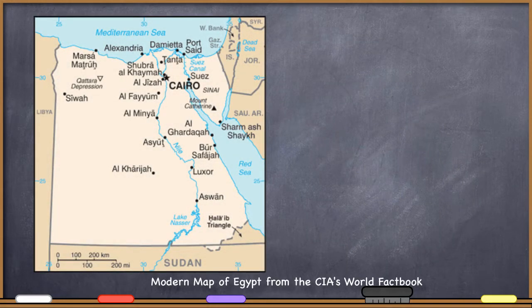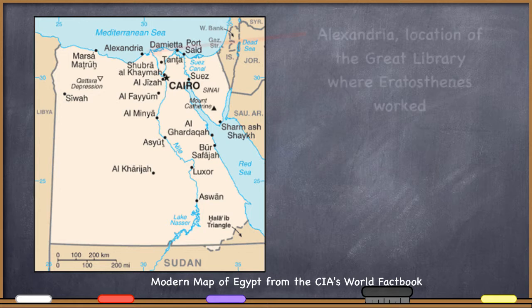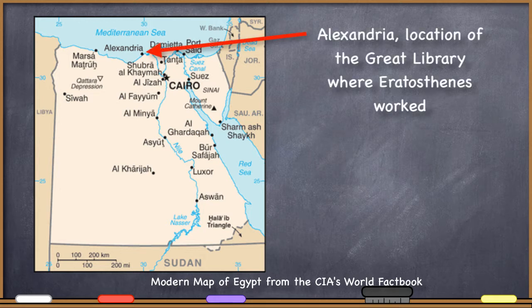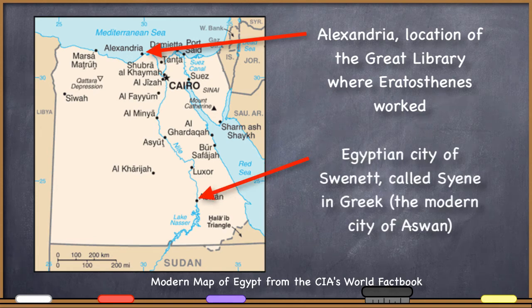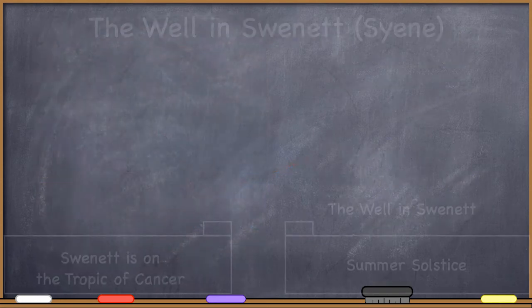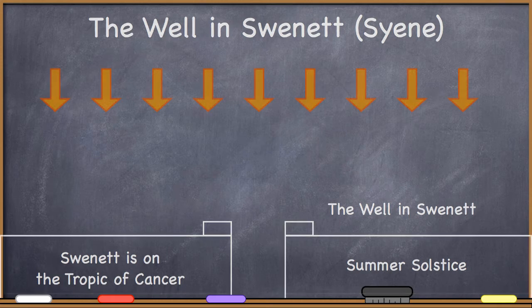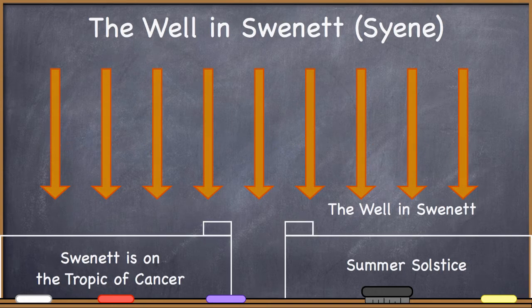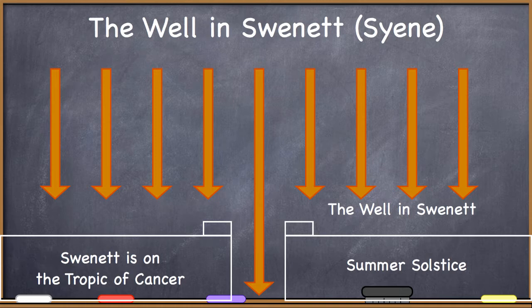Eratosthenes was able to calculate the shape and size of the earth because of his knowledge of the geography of Egypt. He knew that in the Egyptian city of Swenet, which is the present-day city of Aswan, there was a well that was oriented such that at noon on the summer solstice the sun would shine right down to the bottom of the well. This was due to the city's position on the Tropic of Cancer.